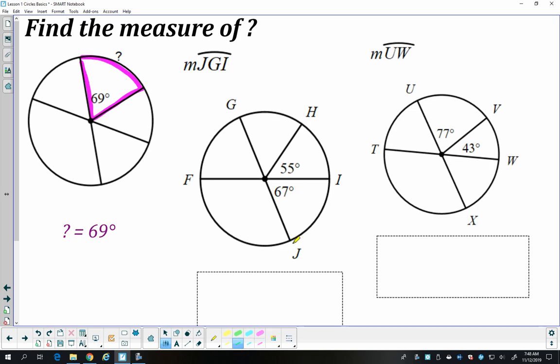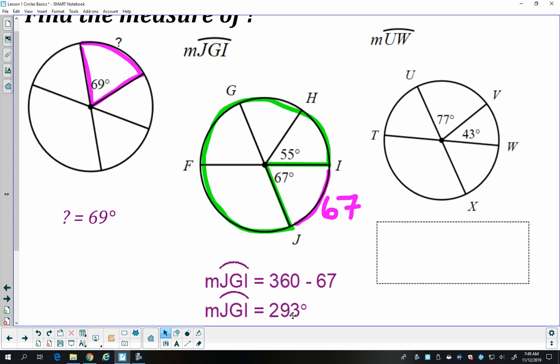Here, arc JGI is right there. It's formed by this angle, but it's the major arc. So arc IJ is going to be 67, and so the green arc, JGI, is going to be 360 minus 67, which is 293.